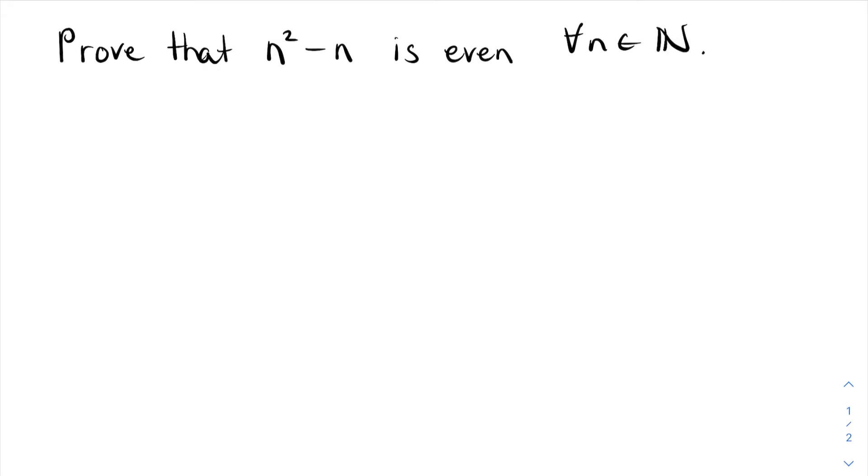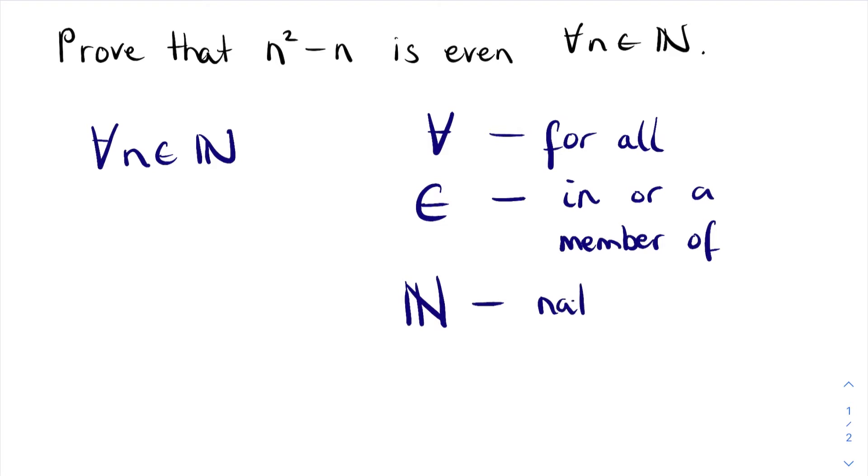But for a moment I just want to discuss what this means. So this means for all, it's a shorthand version. n is n, this funny e is in or a member of, and this funny n is the natural numbers. Now the natural numbers are 1, 2, 3, 4, 5, 6 and so on, so it's like the counting numbers.